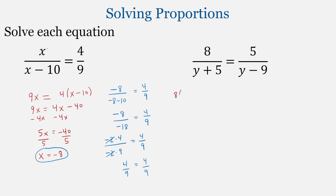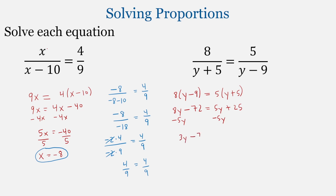And finally, we have 8 times (y minus 9) equal to 5 times the quantity (y plus 5). We simplify each side: 8y minus 72 equals 5y plus 25. We gather the y terms on the left by subtracting 5y from both sides, leaving 3y minus 72 equal to 25. Adding 72 to both sides gives 3y equal to 97. Dividing by 3, we get y equal to 97 thirds, which is also 32 and 1 third.